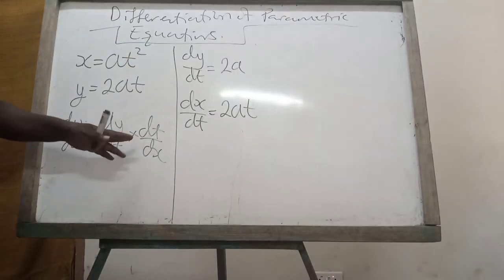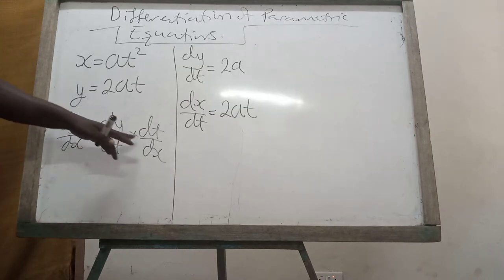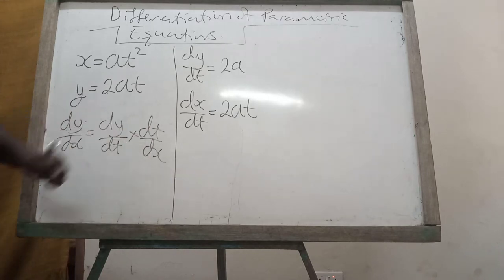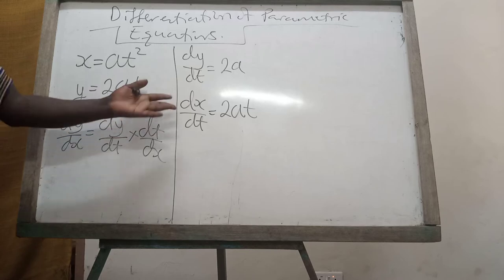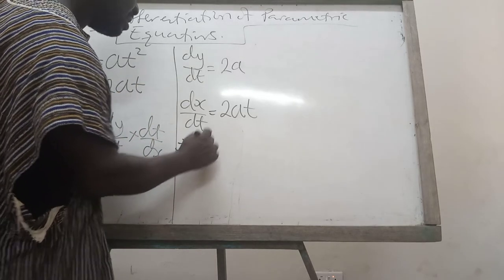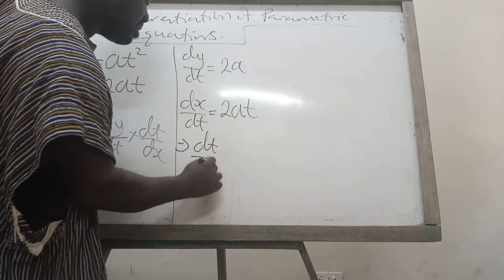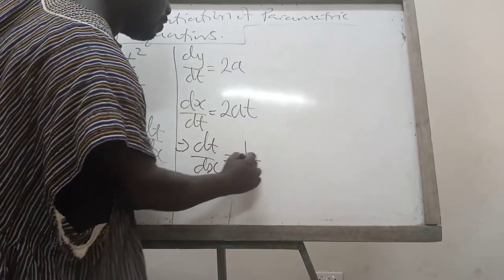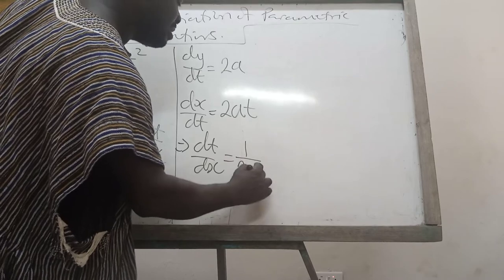But in the formula, we don't have dx/dt, we rather have dt/dx. So what do we do? We turn dx/dt upside down. So this implies that dt/dx is equal to 1 over 2at.